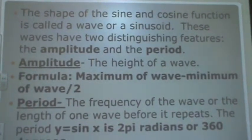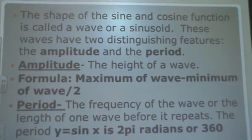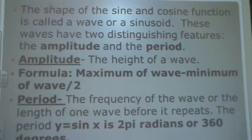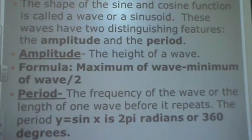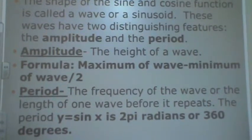The shape of the sine and cosine function is called a wave or a sinusoid. These waves have two distinguishing features: the amplitude and the period. The amplitude is the height of the wave. The formula to find it is the maximum of wave minus minimum of wave divided by 2.